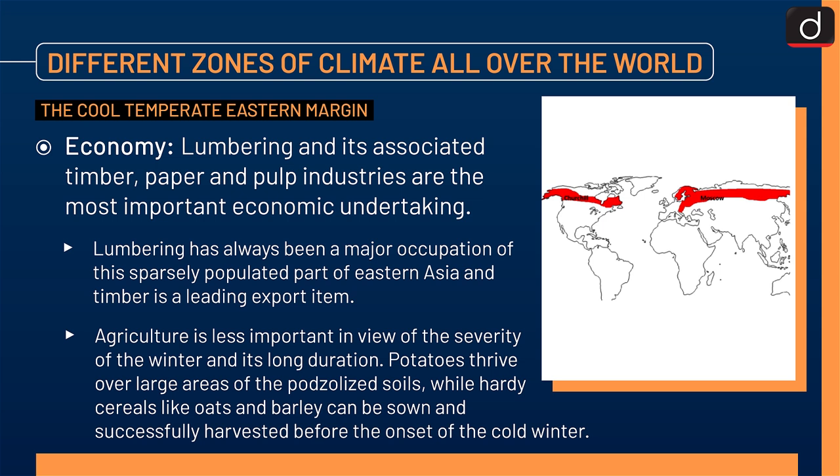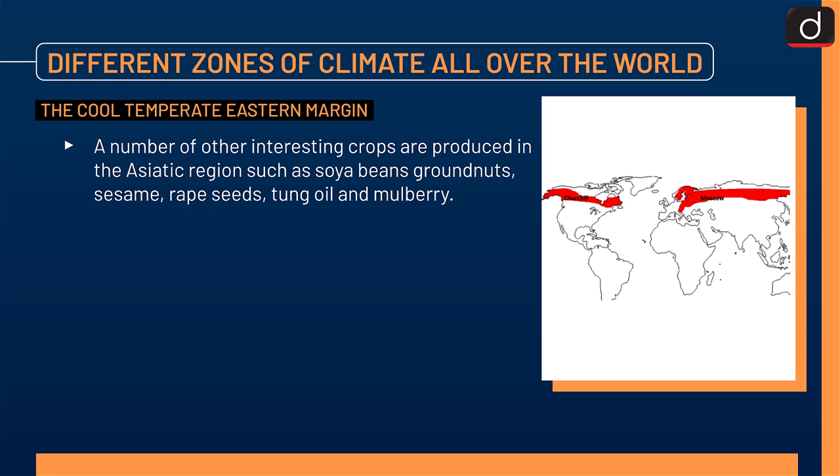A number of other interesting crops are produced in the Asiatic region, such as soya beans, groundnuts, sesame, rapeseeds, tung oil and mulberry.